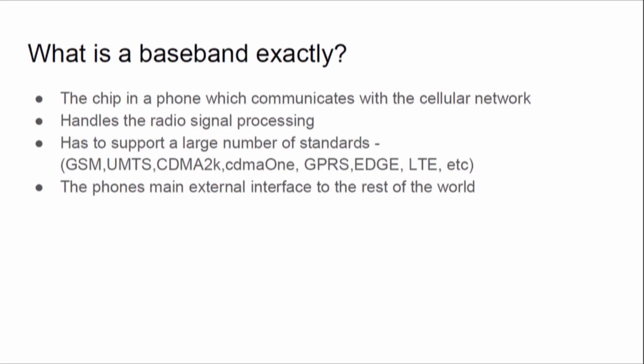The baseband is also your phone's main external interface to the rest of the world — your data, your internet, all your text messages come over this. It's one of the last few attack surfaces where you can actually get truly remote code execution, unauthenticated, with no user interaction whatsoever — along with some other firmware on your phone like Bluetooth and Wi-Fi. A lot of exploits require a browser bug and phishing and somebody clicking a link. With the baseband, you really just need a phone number. That's why it was interesting to me.